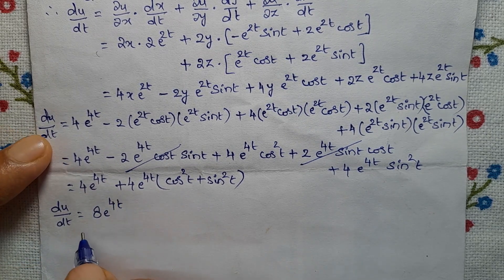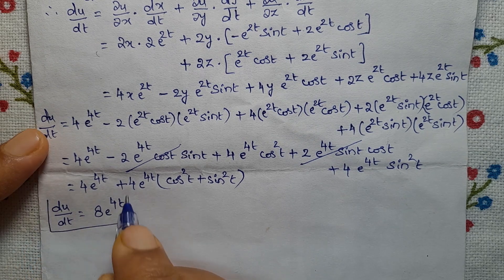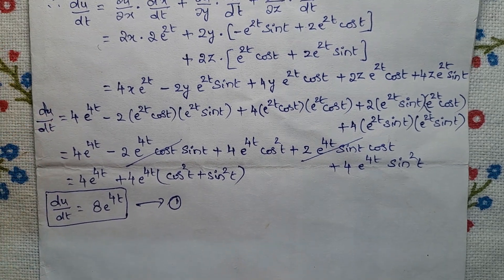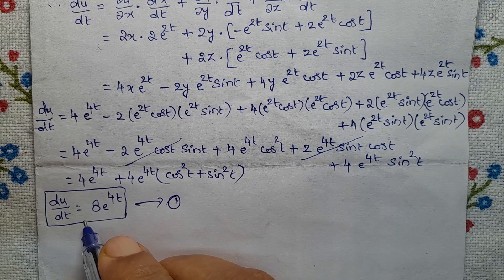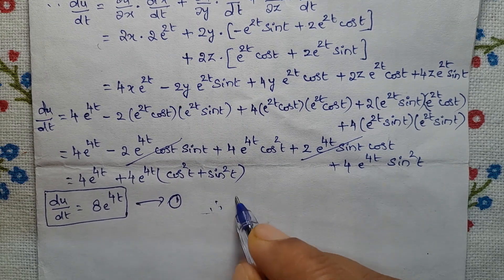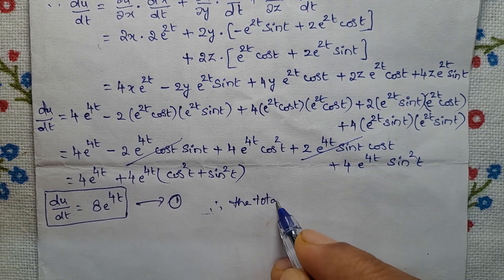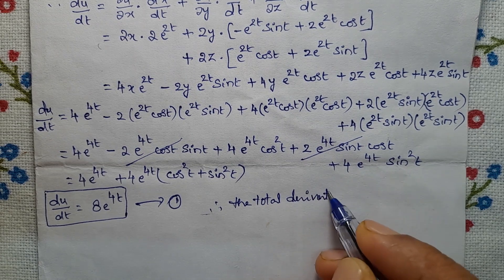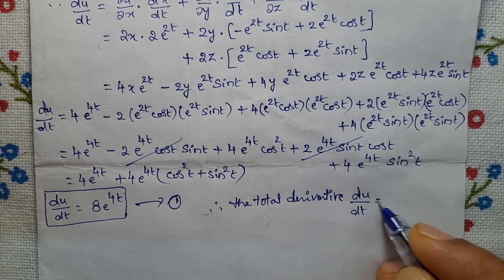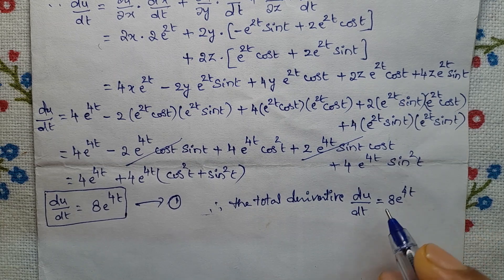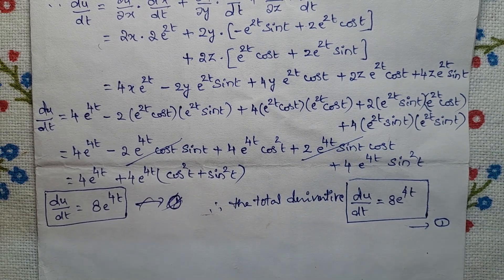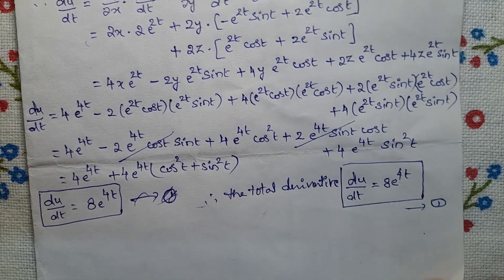So du/dt equals 8e^(4t). This is the total derivative — call it Equation 1.